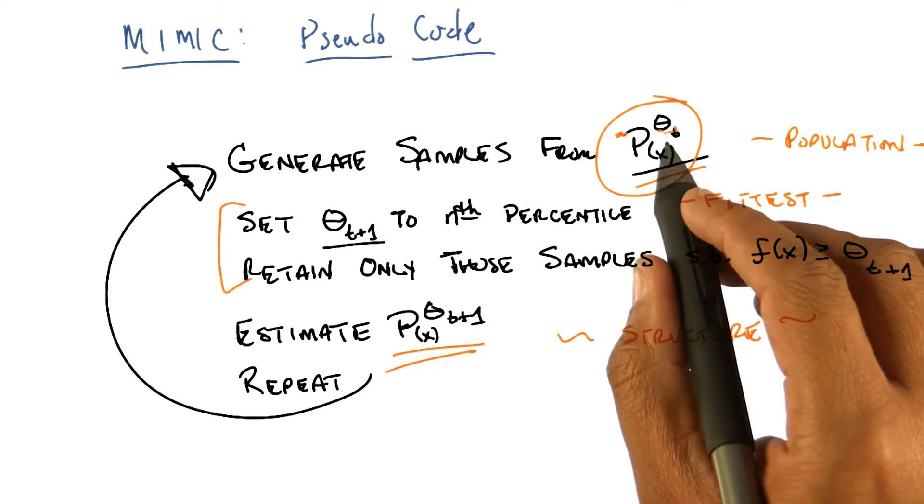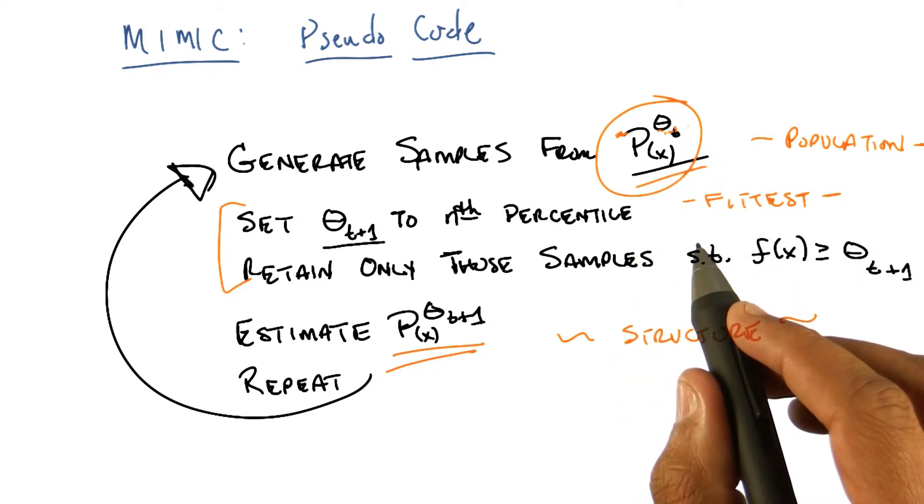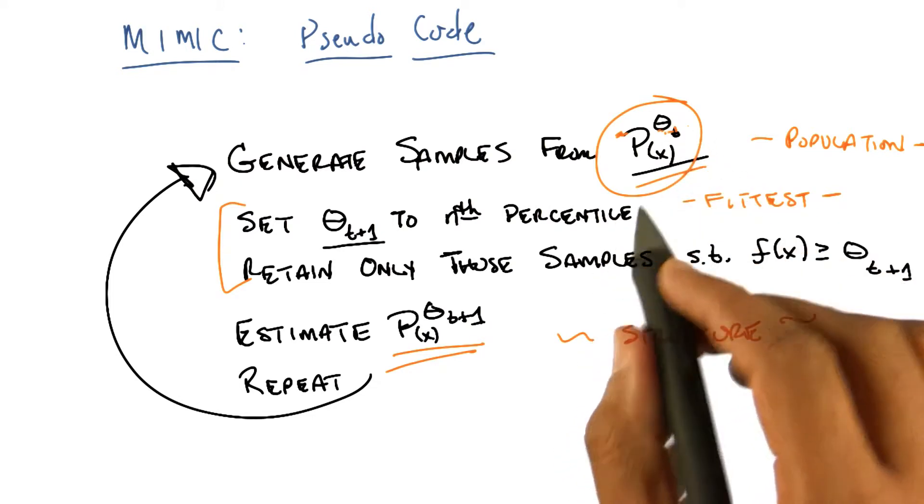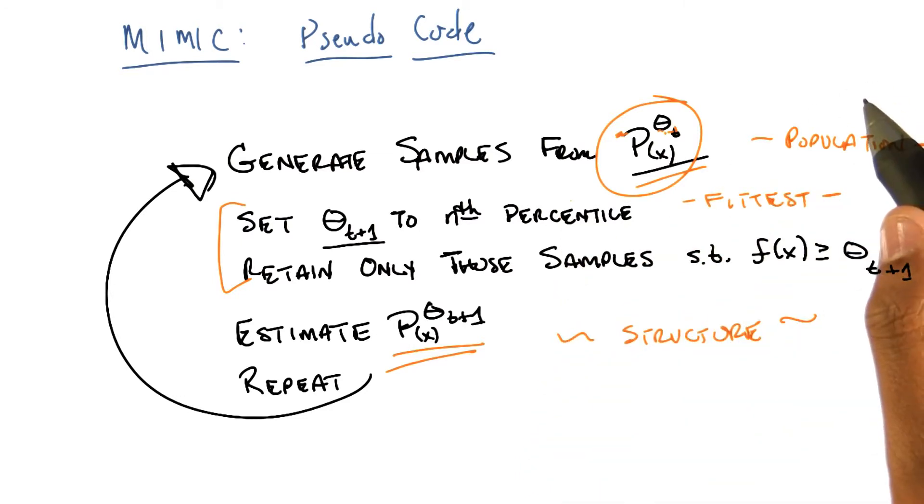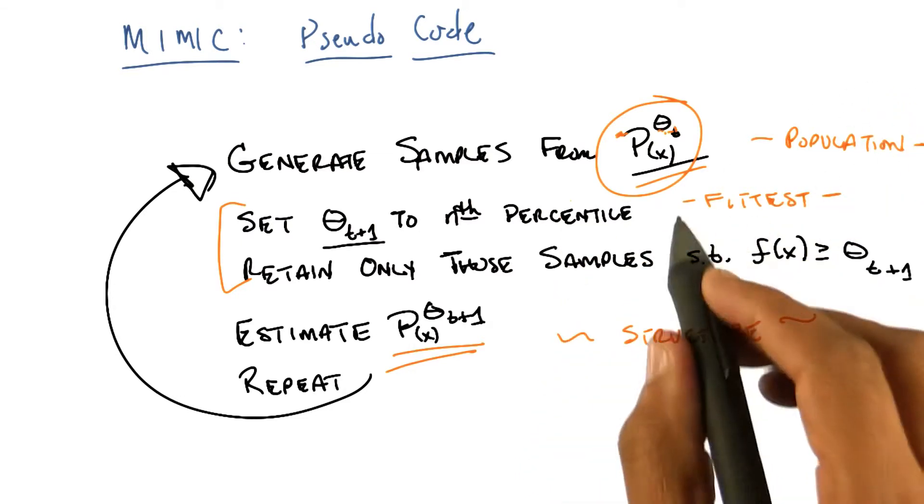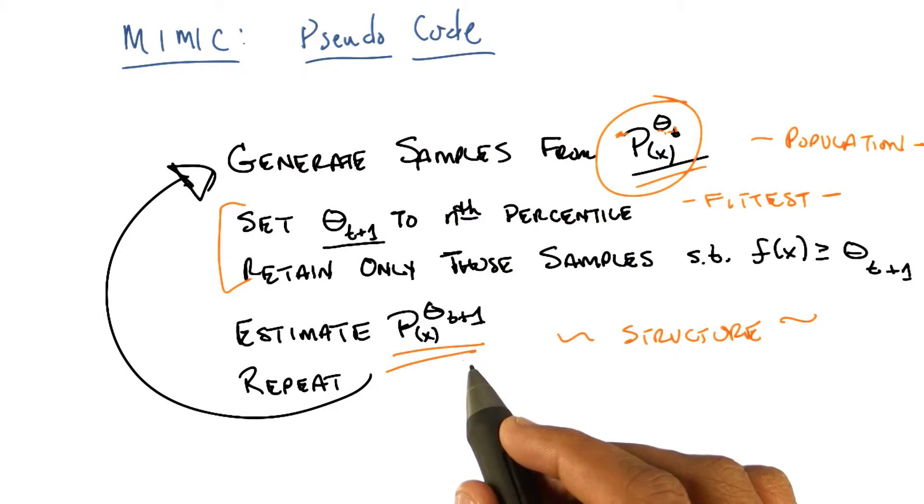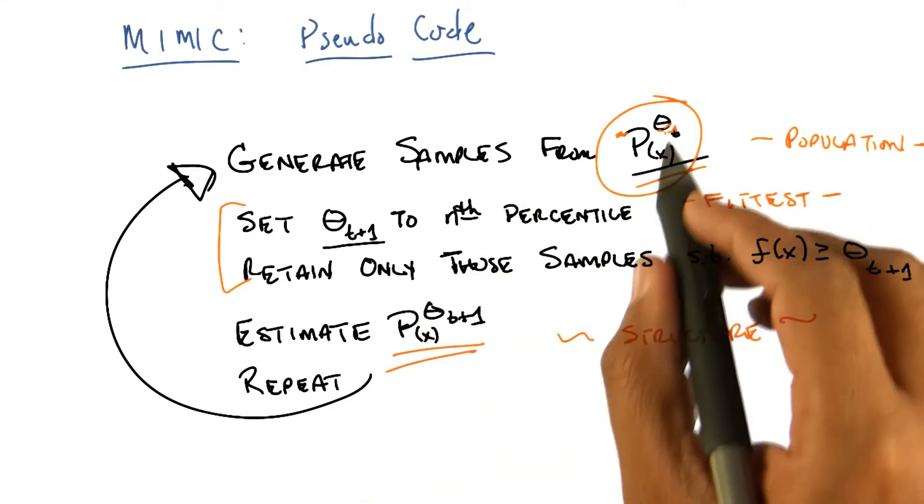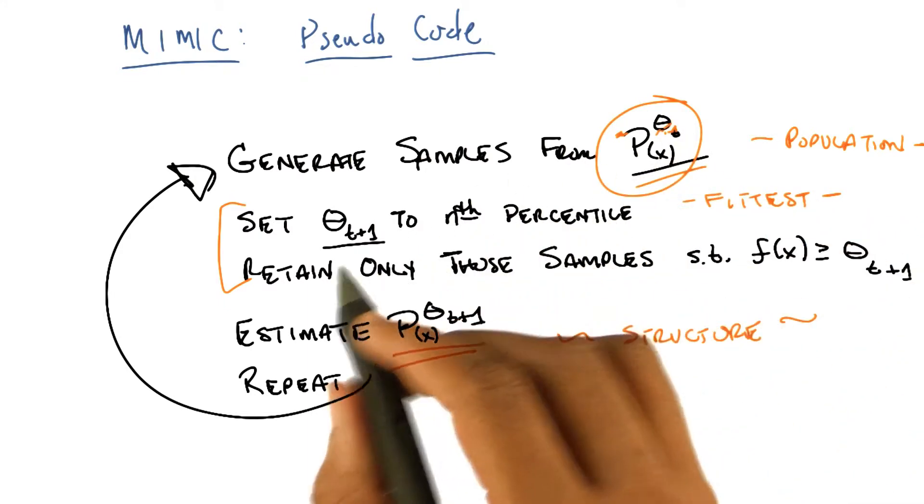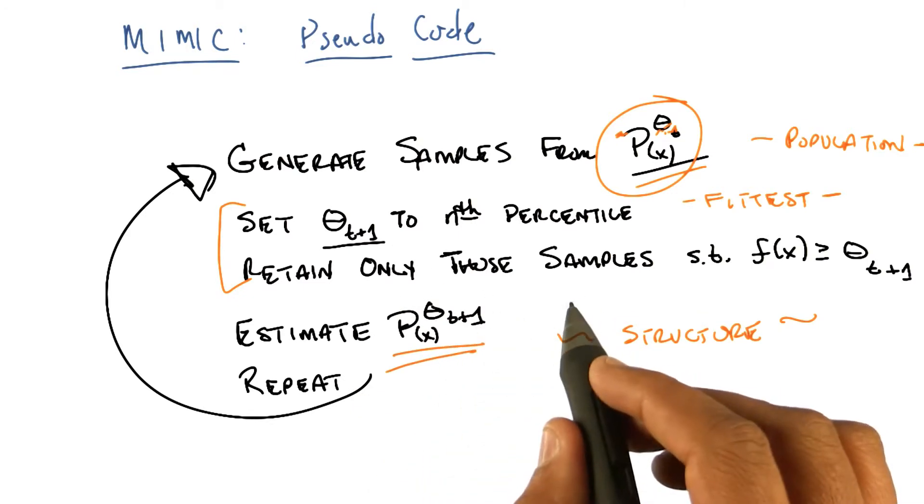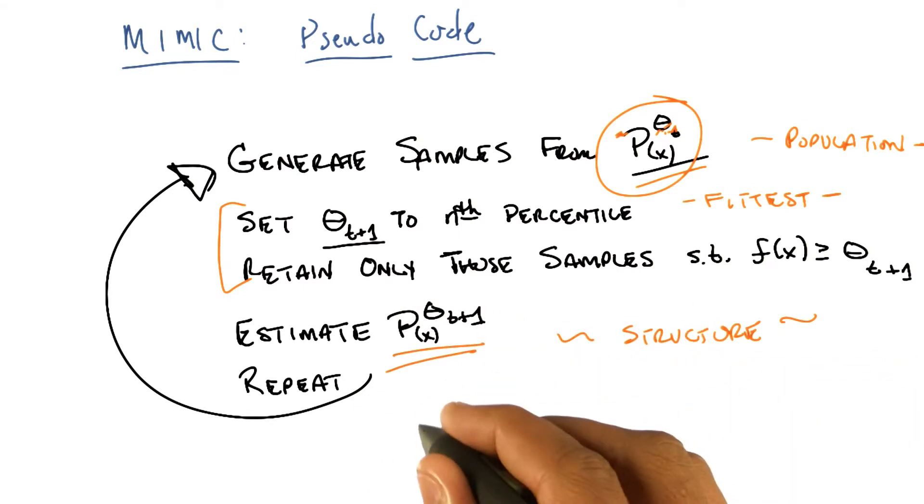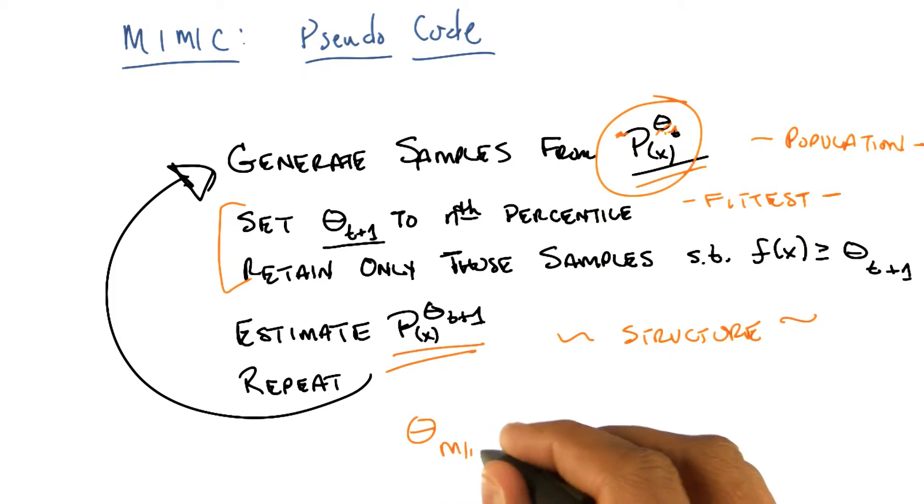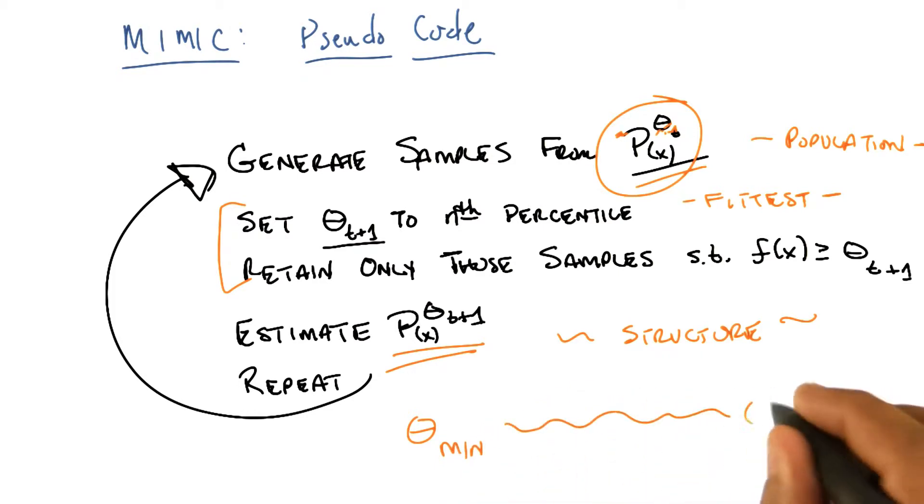And then I'm going to take from those, the set of points that are much higher than theta, hopefully. And use that to estimate a new distribution. And I'm just going to keep doing that. And what should happen is since I'm constantly taking the best of those, is that theta over time will get higher and higher and higher. And I'll move from theta min over time to theta max. And when I get to theta max, I've converged and I'm done.